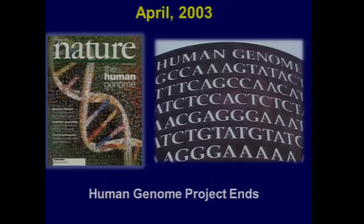Its goal was quite straightforward: to determine the order of the 3 billion letters that make up the human genomic blueprint. The institute I now direct was created by the U.S. Congress to lead the U.S. effort in the Human Genome Project. That project, which I was involved in from beginning to end, was wildly successful, and 13 years after it started, it ended.